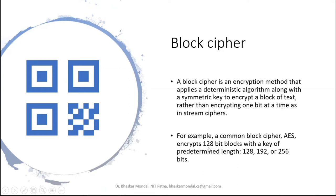AES encrypts a 128-bit block — that means it takes an input plaintext of 128-bit size at a time and encrypts that block with a key. That key can be a predetermined length, and the length can be 128-bit, 192-bit, or 256-bit. So there are three variants of AES based on different key sizes.